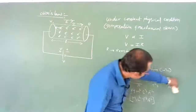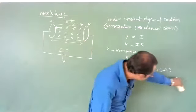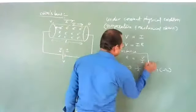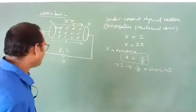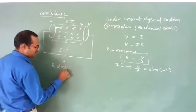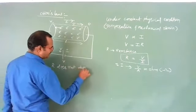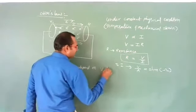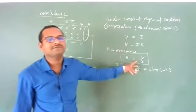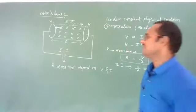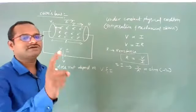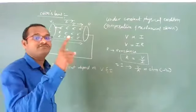Resistance is a fundamental property of the material. Although R = V/I, resistance does not depend upon the value of potential difference or current — that is just a mathematical formula. Resistance purely depends upon the nature of the material, dimensions of the material, and direction of flow of current.